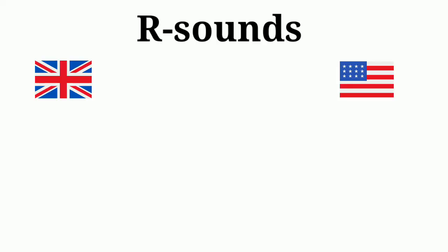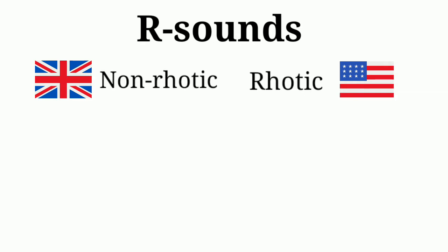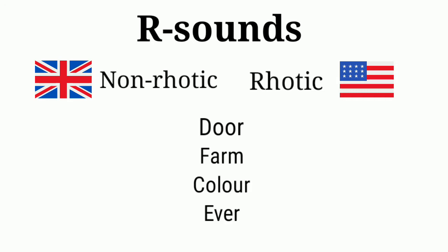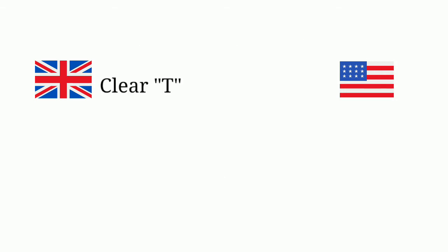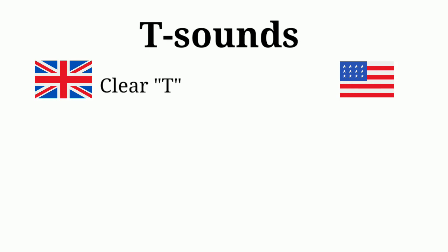Now for accent differences. I will focus on General American and Received Pronunciation for the UK. The American accent is rhotic, which means the R is always pronounced clearly. The British accent is non-rhotic — the R is not pronounced unless followed by a vowel. For example: 'door' (British) vs 'door' (American). Other examples: farm, color, ever.